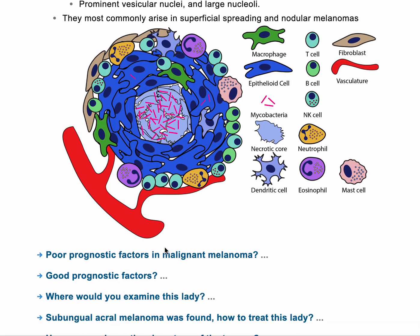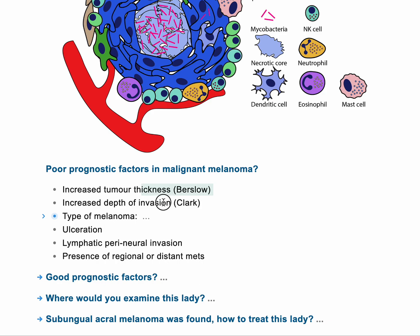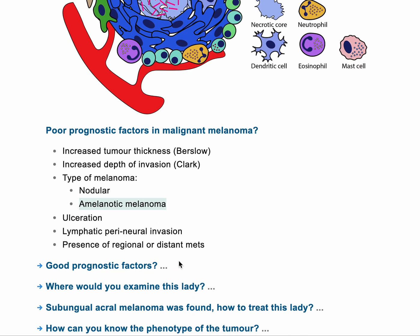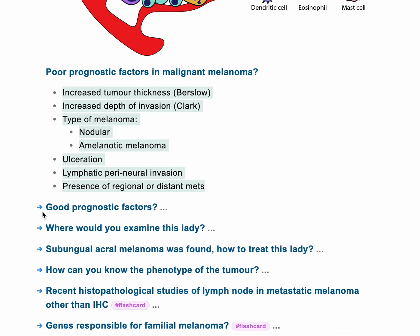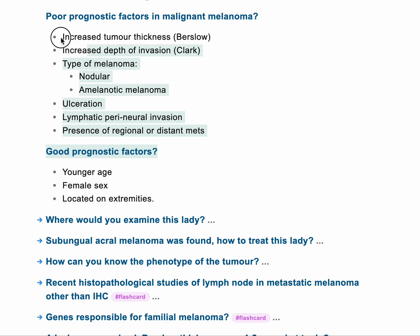What are the poor prognostic factors in malignant melanoma? These include: age of the patient, thickness of the melanoma, depth of invasion, differentiation of melanoma, and local and distant metastases. Being male is a poor risk factor. Having family history or personal history of previous melanoma are also bad prognostic factors. Tumor thickness, invasion, type of melanoma — specifically amelanotic melanoma — ulceration, lymphatic invasion, and regional or distant metastases are all bad prognostic indicators. Good prognostic factors include young age, female sex, and location in the extremities.